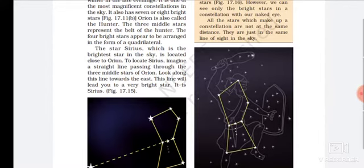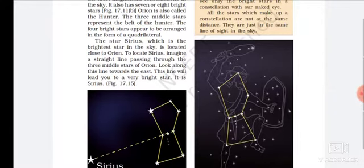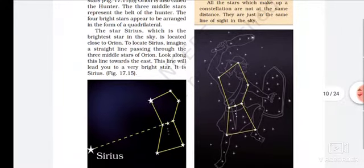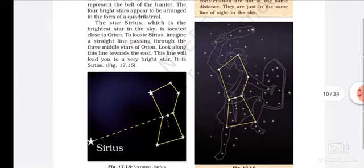The four bright stars appear to be arranged in the form of a quadrilateral. The star Sirius, which is the brightest star in the sky, is located close to Orion.